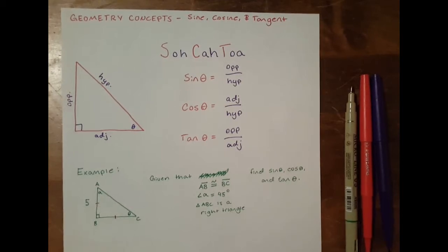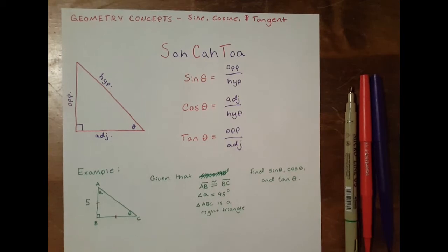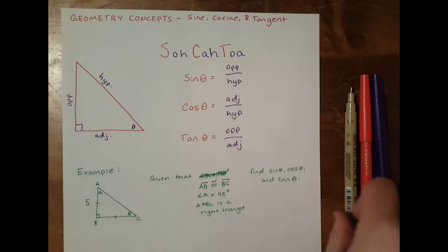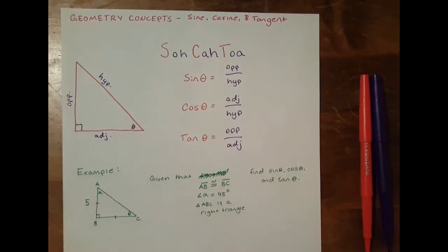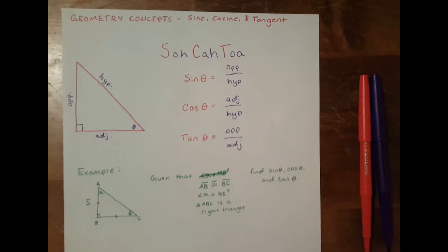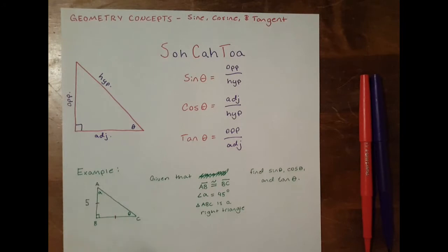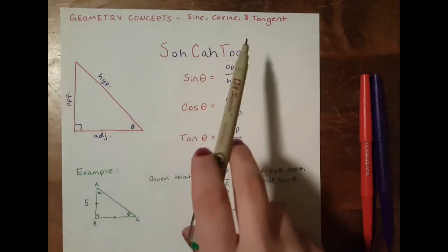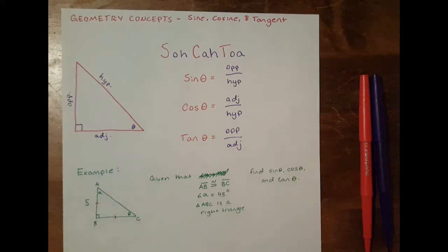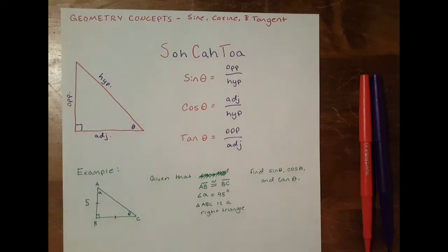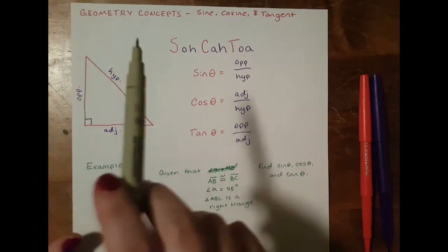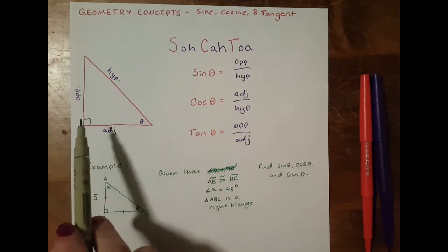So today, as you're listening, please enjoy Redbone by Childish Gambino as we talk about sine, cosine, and tangent, which is a geometry concept and it's very important for all future math after geometry. When we're talking about sine, cosine, and tangent, these trigonometric functions, we're talking about right triangles.